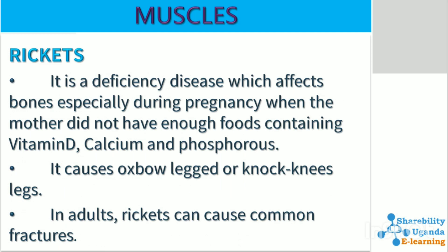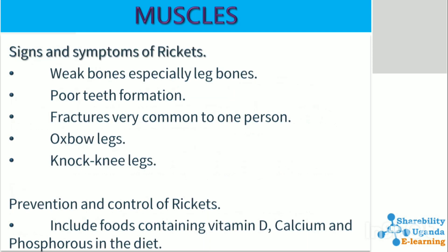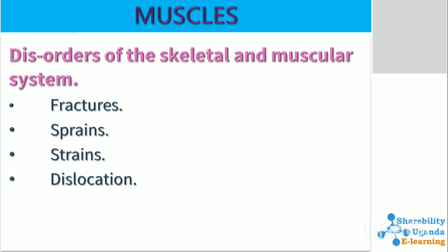Rickets is a deficiency disease which affects bones, especially when during pregnancy the mother did not have enough foods containing vitamin D, calcium, and phosphorus. It causes bow-legged or knock-knee legs. In adults, rickets can cause common fractures. Signs and symptoms include weak bones especially leg bones, poor teeth formation, frequent fractures, and bow-legged or knock-knee legs. Prevention includes consuming foods containing vitamin D, calcium, and phosphorus.